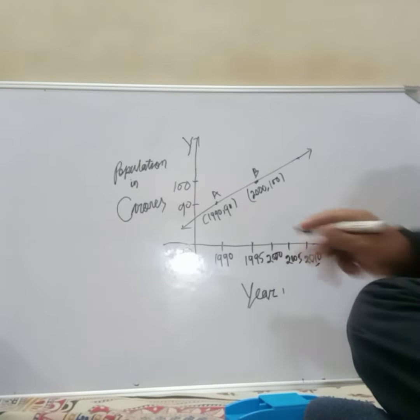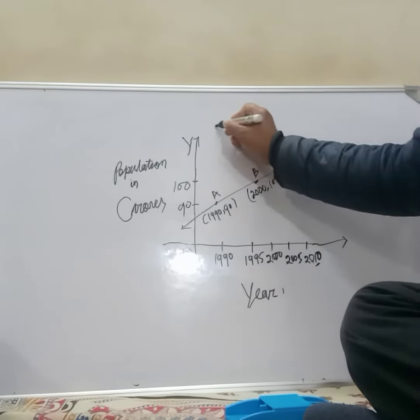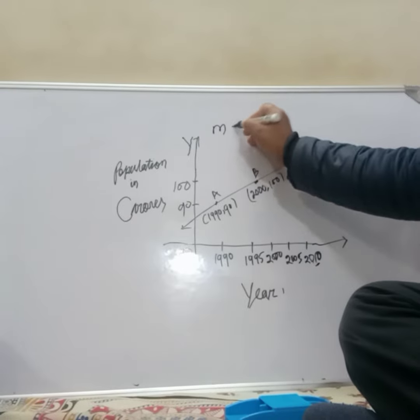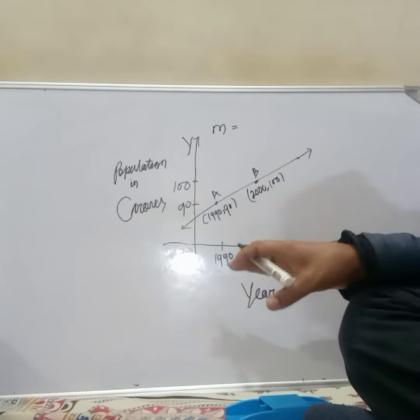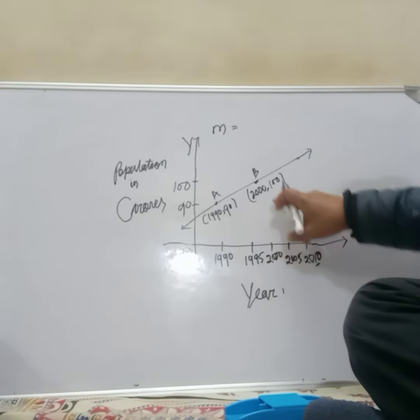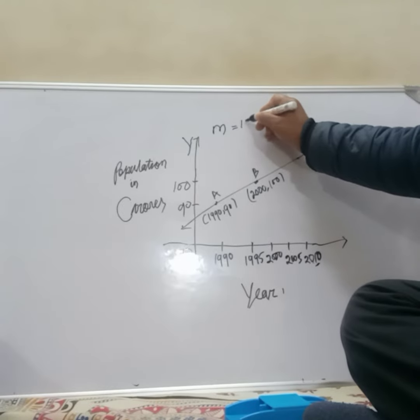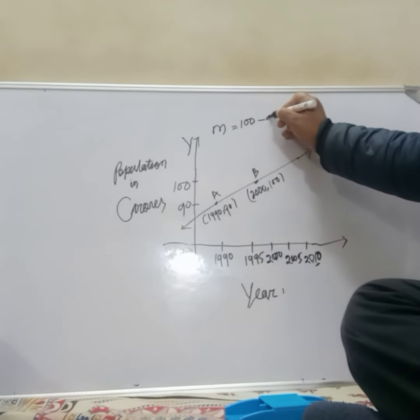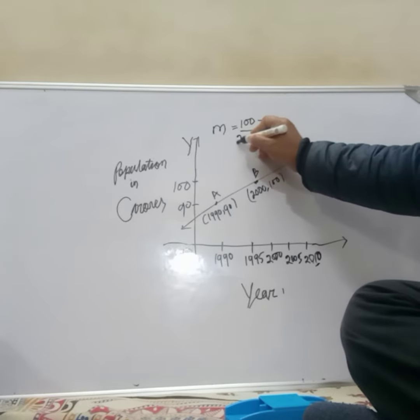First two points you are given, means x1, y1, x2, y2 are given. You have to first derive the m value, slope value: y2 minus y1 upon x2 minus x1. This means 100 minus 90 upon 2000 minus 1990.